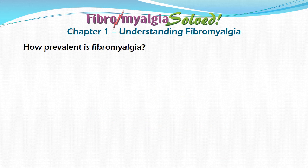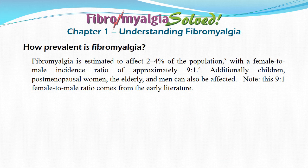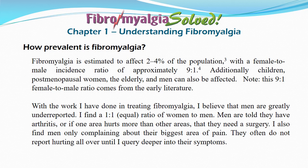How prevalent is fibromyalgia? It is estimated to affect between two to four percent of the population. We've all heard the stat that there's a female to male ratio of approximately nine to one. This 9:1 ratio comes from the early literature. With the work I've done treating fibromyalgia, I believe that men are greatly underreported. I find a one-to-one or equal ratio of women to men.